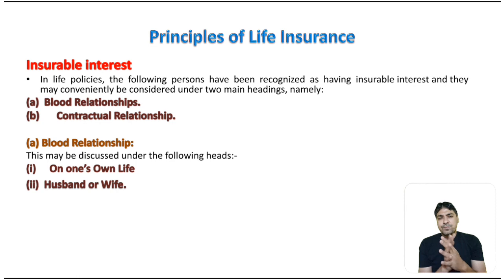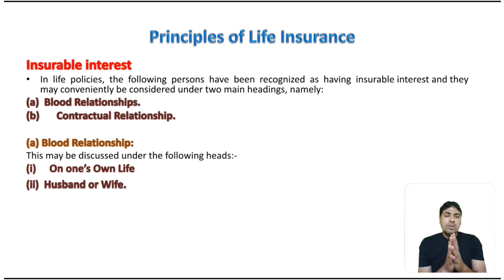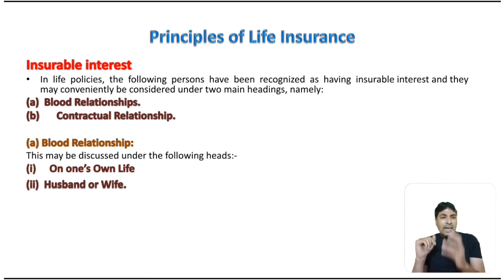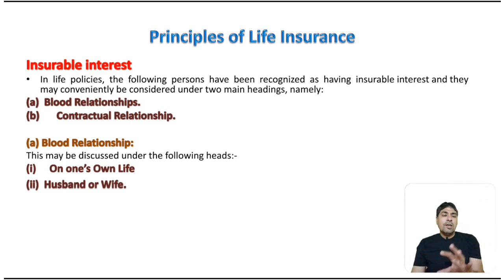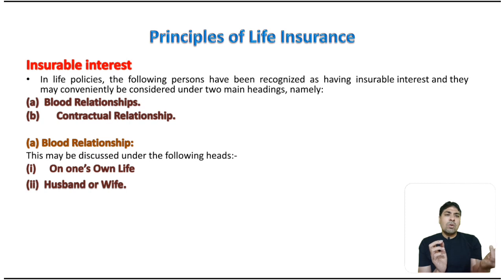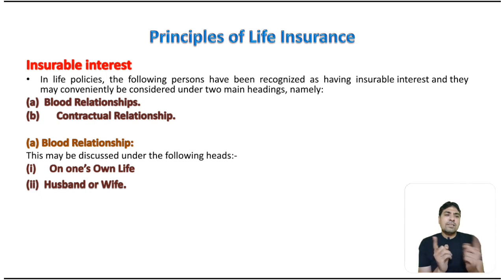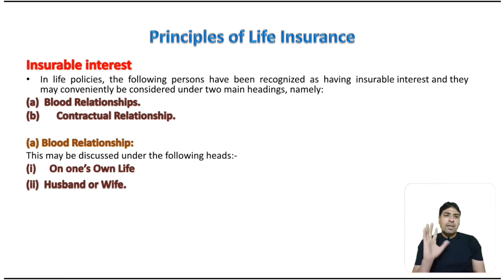The second head is husband and wife. Husband and wives are treated as one in the eye of law. Husband can prepare a life insurance contract on the life of wife and wife can prepare a life insurance contract on the life of husband. Husband is having insurable interest in the life of wife and wife is having insurable interest in the life of husband — because if husband dies, the wife suffers loss as she is dependent, and if wife dies, husband suffers loss due to natural love and affection.